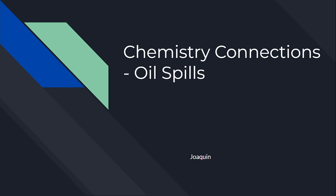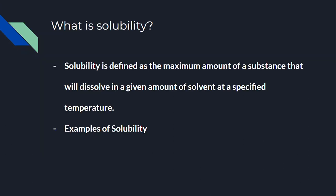Hi, I'm Joaquin and this is Chemistry Connections about oil spills. The first topic I'm going to be addressing is solubility. Solubility is defined as the maximum amount of a substance that will dissolve in a given amount of solvent at a specific temperature. Basically, solubility refers to things that are able to dissolve in different substances.